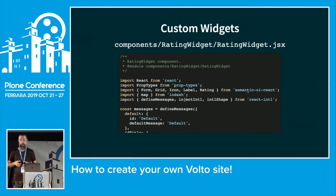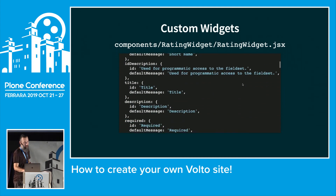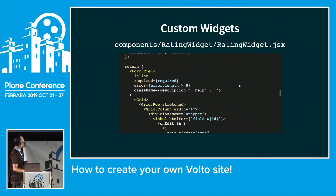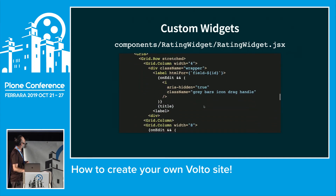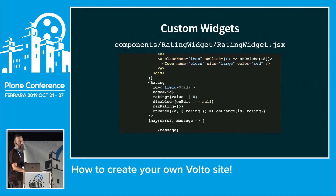To create a widget, we create the file in the components folder since it is yet another component. To not start from scratch, we take an existing widget — for example the text widget which is the simplest — and start from there. This is basically a one-to-one copy of the text widget, with the form and grid row visible. The only change: instead of an input field, we use a Rating component from Semantic UI.